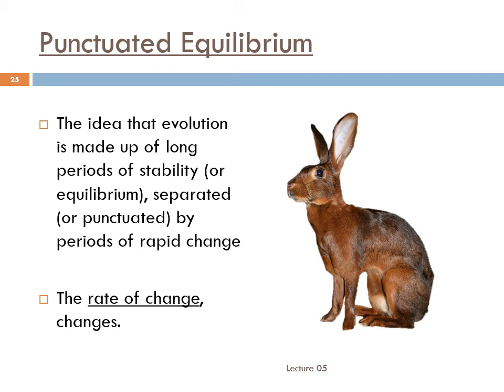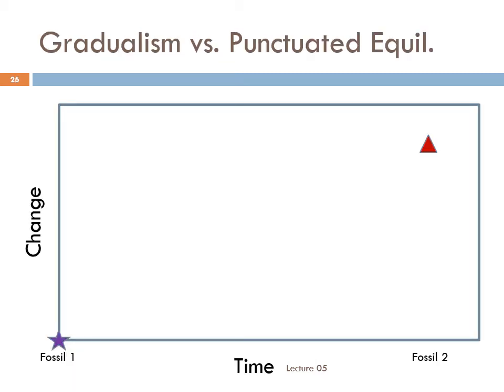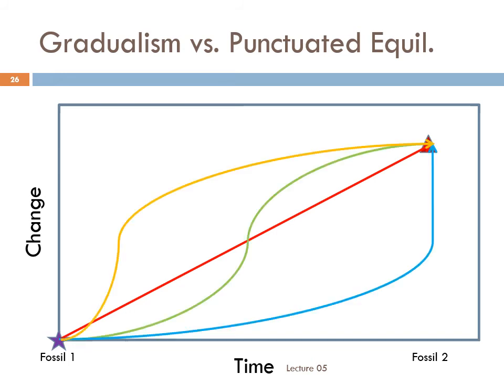Punctuated equilibrium views macroevolution like the hare: once the race starts, he shoots off very quickly, then stops and takes a rest, then shoots off very fast again, then pauses until he reaches the finish line. The different interpretations have some significant effects on how scholars connect species through time. If fossil two is a descendant of fossil one, a gradualist would describe the evolutionary path between them with a straight line. Punctuated equilibrium would describe the path with some kind of curve — more vertical parts represent punctuations, more horizontal parts show equilibrium. Each curve is a theory. The only way to distinguish between these different theories is to find more fossils that fall between one and two and see where along which curve they fall.